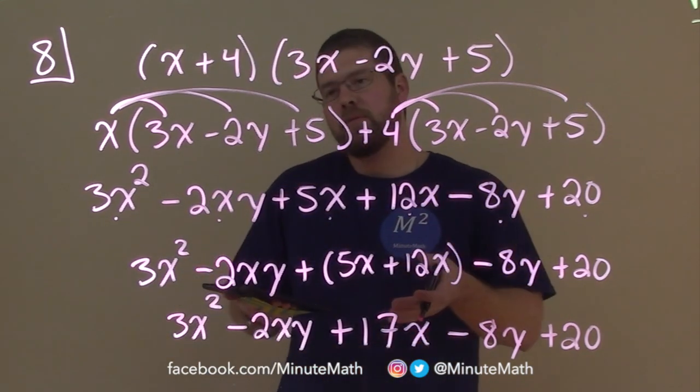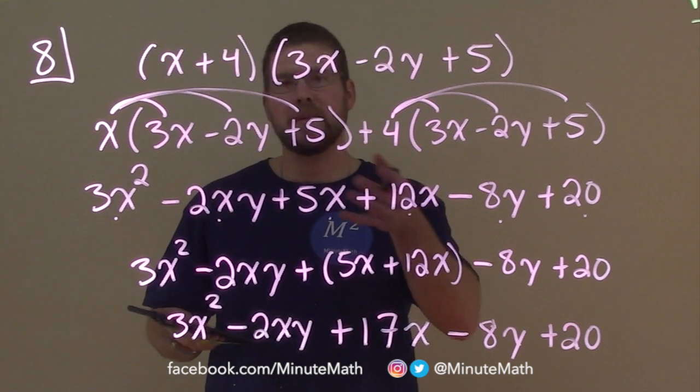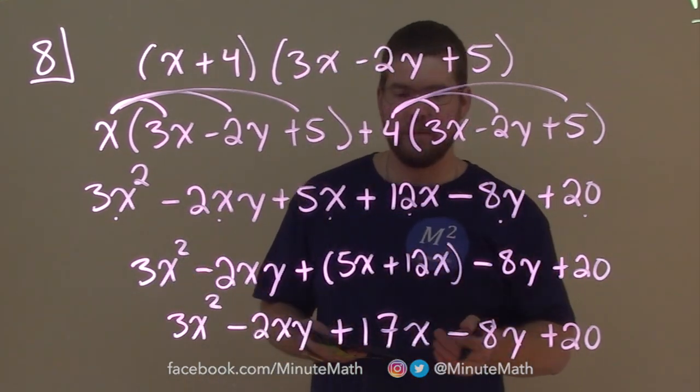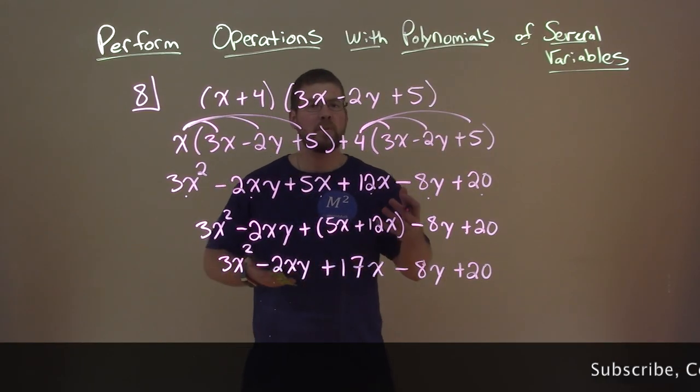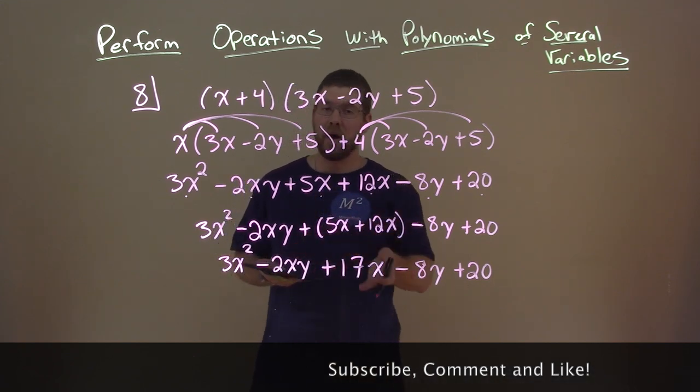We've just simplified our first polynomial, right, being multiplied together with different variables or several variables. Same rules still apply if you have multiple variables, more than just two. In this case, our variables were just x and y.